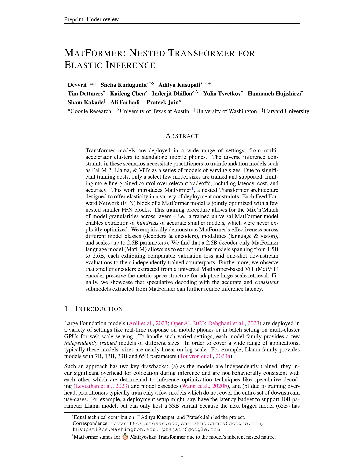To train the matformer model, we adopt a simple strategy of jointly optimizing all the G-nested sub-models. The training loss is a weighted average of the loss of each sub-model, with uniform weights, one per granularity.